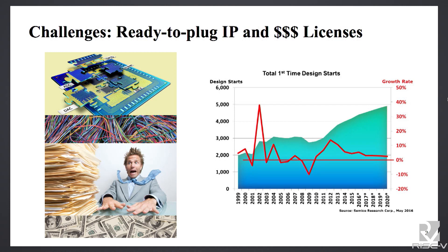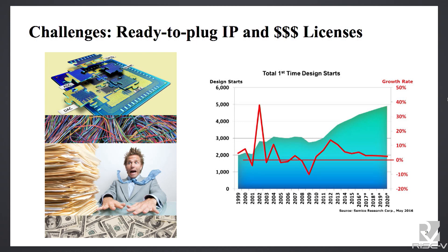First-time system-on-chip designers are limited by design costs and IP licensing. IP licensing requires a monotonic agreement that decreases the momentum of new key applications. The figure on the right shows the average growth of first-time system-on-chip designers, taken from SemiCo versus Corporation. You will see that the pace has been kind of flattened, considering the complexity and also the design cost.